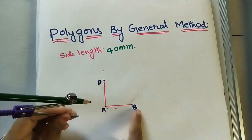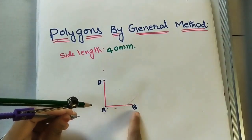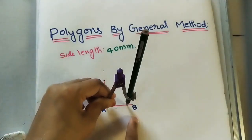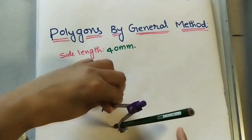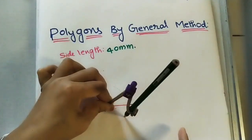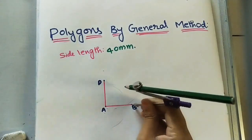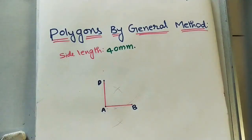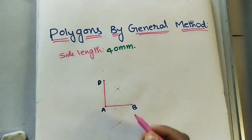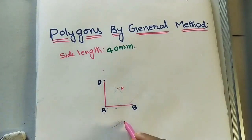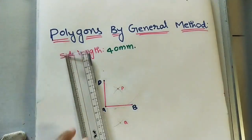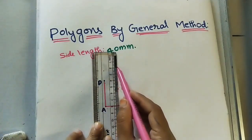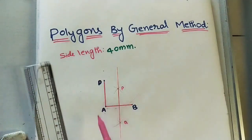Now I am bisecting AB into two equal halves. Using a compass, take more than half of AB, place the compass at A and draw an arc on both sides. With the same radius and B as center, cut those arcs. The intersection points are P and Q — join P and Q to get the perpendicular bisector line.